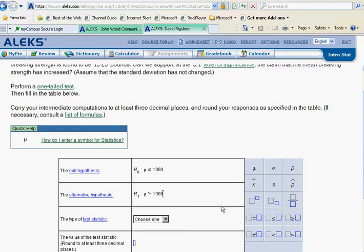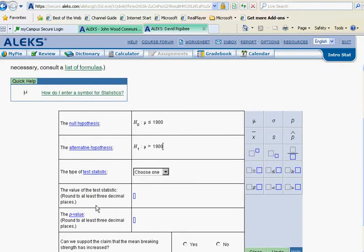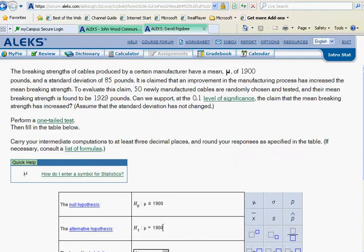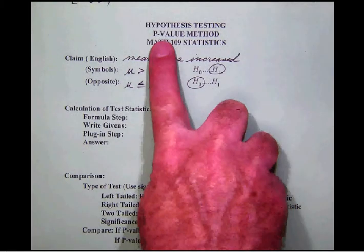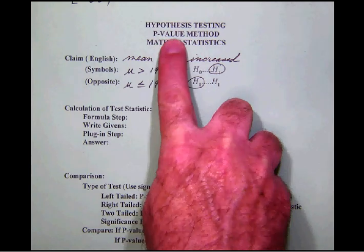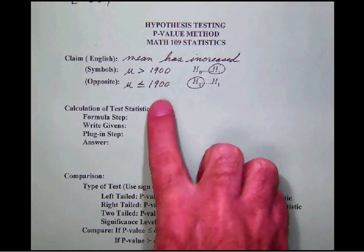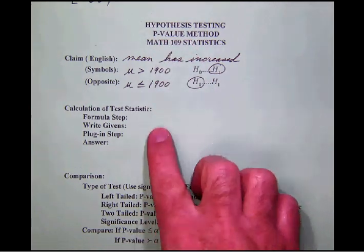Okay, now notice while we're in here that this is a p-value test, and so we have to be sure that in our problem here that we are using the p-value form for this. So we've got to be careful there, and of course, the next thing we need to do is calculate our test statistic.